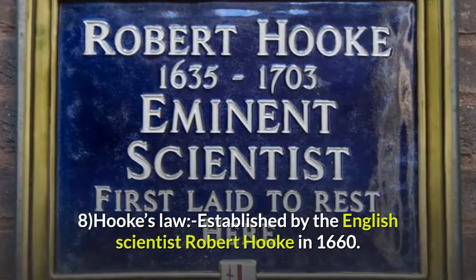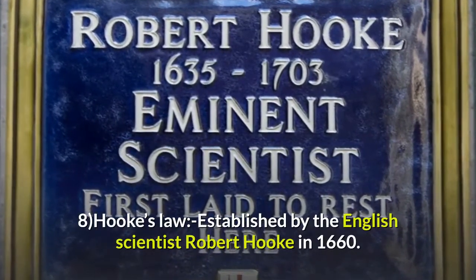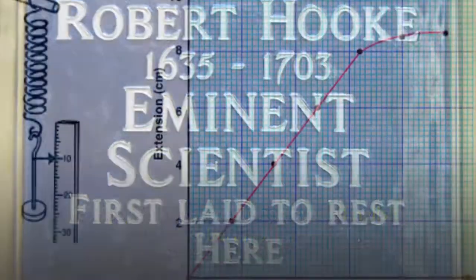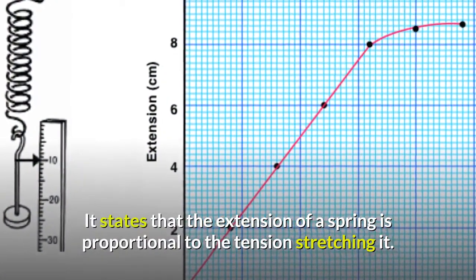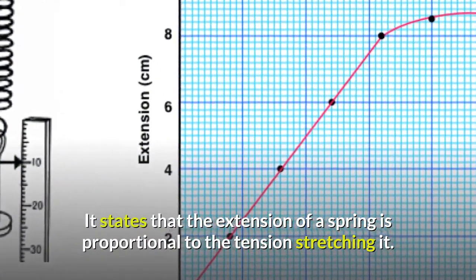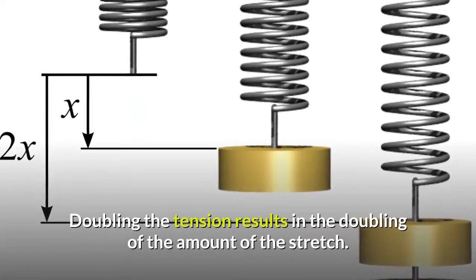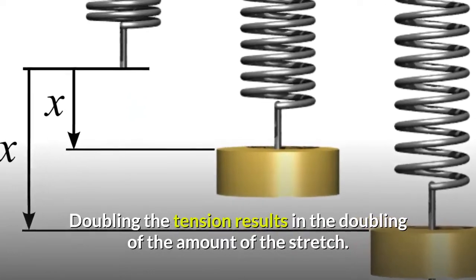Number 8: Hooke's Law, established by English scientist Robert Hooke in 1660. It states that the extension of a spring is proportional to the tension stretching it. Doubling the tension results in doubling the amount of stretch.